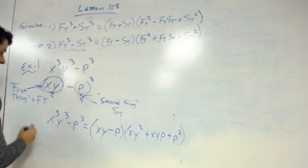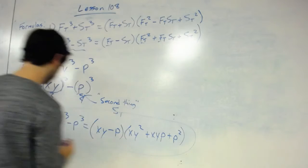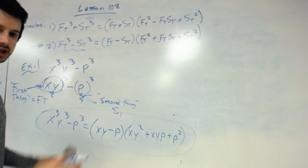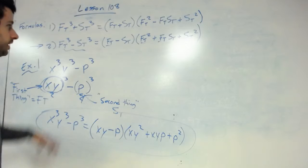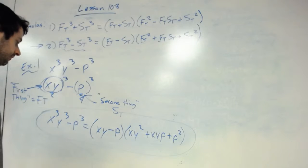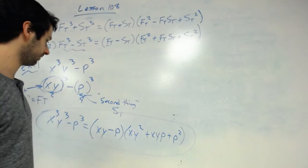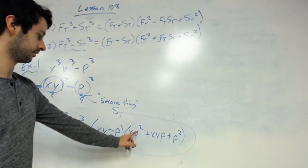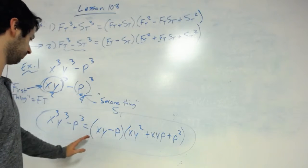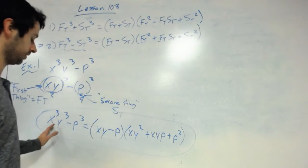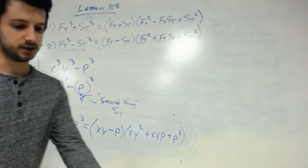And this right here would be your answer. And that's literally all you do. You just plug in everything according to the two formulas. Because if I multiply these out, as I get x, what would end up happening is I would get x cubed, y cubed, minus p cubed.